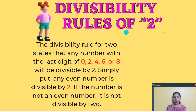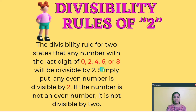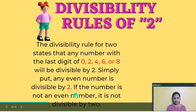Divisibility rules of 2. The divisibility rule for 2 states that any number with the last digit of 0, 2, 4, 6, or 8 will be divisible by 2. Simply put, any even number is divisible by 2. Example: 246 is divisible by 2 because the last digit is 6. If the number is not an even number, it is not divisible by 2.